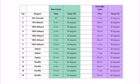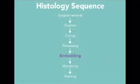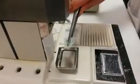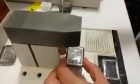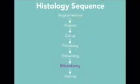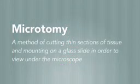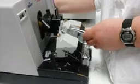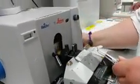Once processing takes place, the tissue is moved to the next step: embedding. Embedding is a process whereby tissue is secured in a wax mould in order for it to be correctly orientated for microtomy. The tissue is placed in the appropriate cassette at the correct orientation before being flooded with paraffin wax and transferred to a cold plate to solidify. Now we've secured our sections in paraffin wax, it's time to use the microtome. Microtomy is a method of cutting thin sections of tissue and mounting on a glass slide in order to view it under the microscope. A rotary microtome is able to cut sections of hardened paraffin wax containing the embedded tissue so thin that light is able to pass through it.